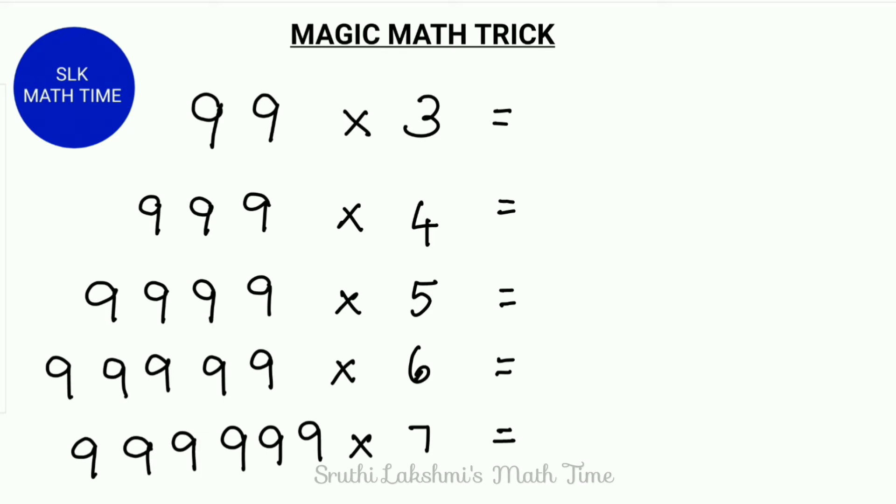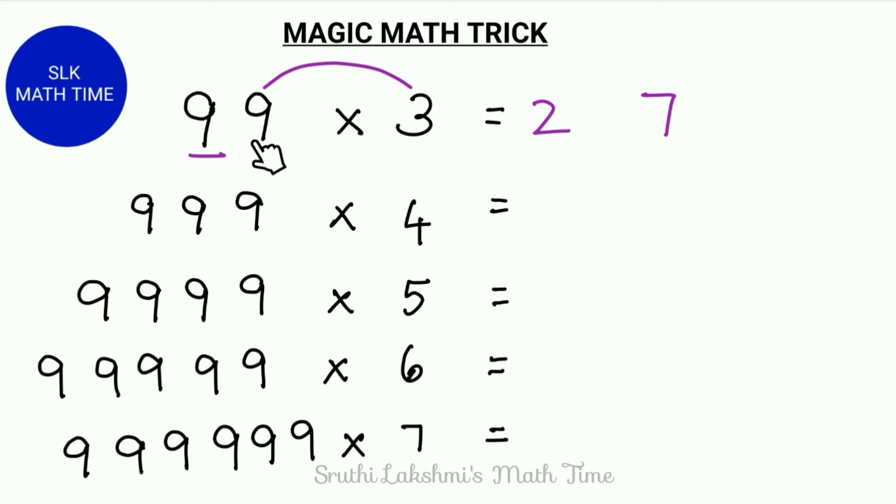99 times 3. So we first multiply 9 times 3 which is 27. We write 27 with a little gap in between. How many 9's are there before this 9? There is one 9. So we write one 9 in the middle. So 99 times 3 is 297. Let's try 999 into 4.